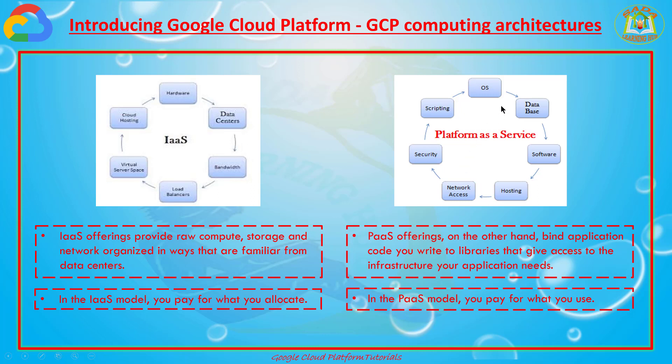For example in PaaS, if you are using the OS, you pay for OS only — however much time you use it. If you are using software for one, two, five, or ten hours, you pay for only those hours; no need to pay for extra hours. Simply: infrastructure as a service, you pay for what you allocate; platform as a service, you pay for what you use.